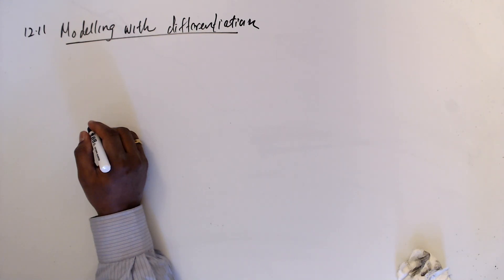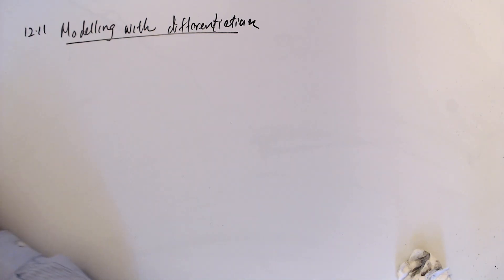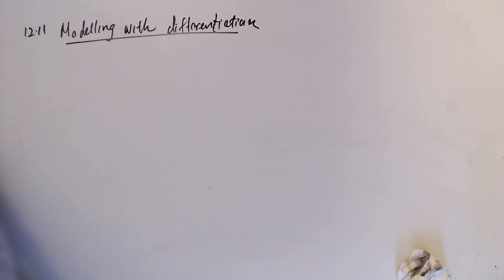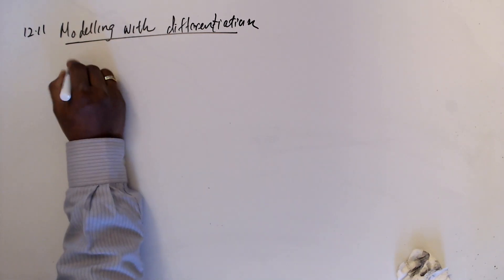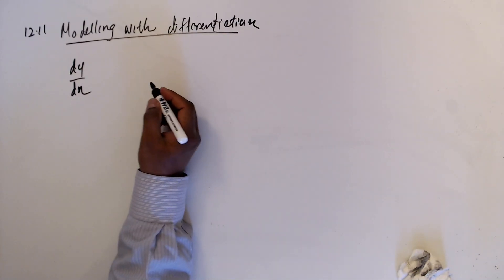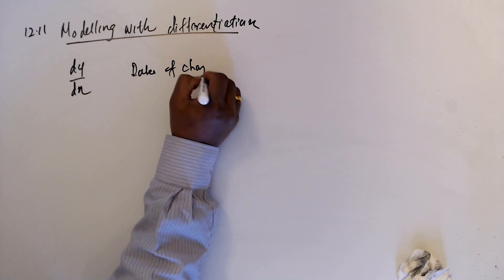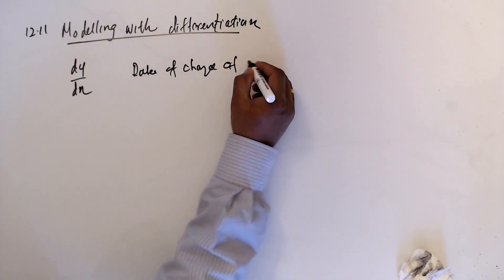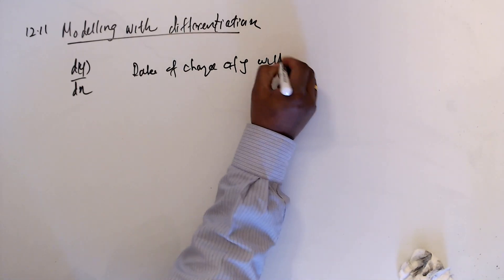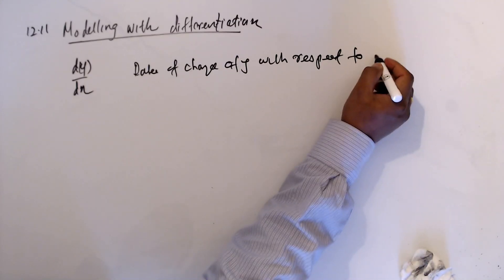12.11: Modeling with differentiation. We can take dy/dx as the rate of change of y with respect to x.